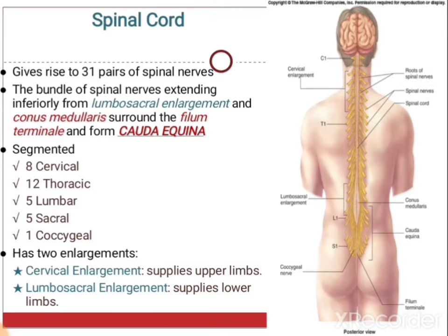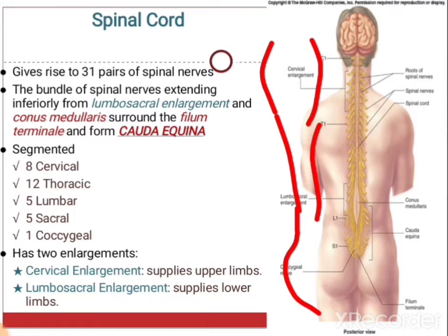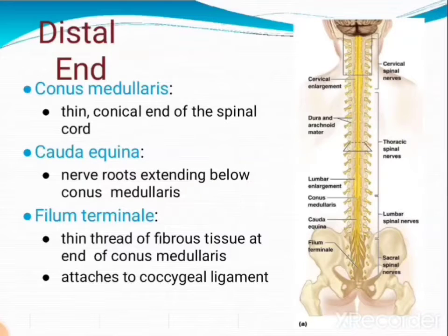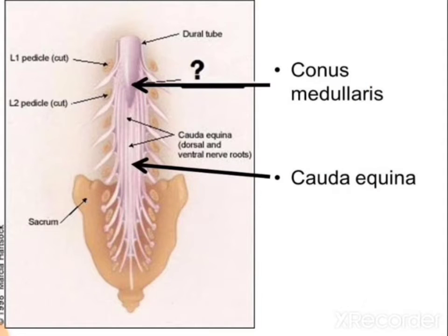It presents two enlargements. In the cervical region to supply the upper limb it gets enlarged, then becomes narrow, and in the lumbar region to supply the lower limb it again gets enlarged to form the lumbosacral enlargement. At the distal end it presents the conus medullaris — the thin conical end of the spinal cord. The cauda equina consists of nerve roots extending below the conus medullaris and resembles a horse's tail, which is why it is named cauda equina — 'cauda' means tail and 'equina' means horse. The filum terminale is a thin thread of fibrous tissue at the end of the conus medullaris, attached to the coccygeal ligament.